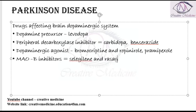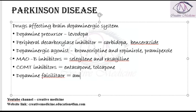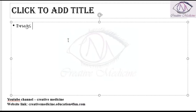The MAO-B inhibitors are selegiline and rasagiline. Then we have catechol-O-methyltransferase inhibitors — these COMT inhibitors are entacapone and tolcapone. Then we have dopamine facilitators; amantadine can also be used in Parkinson's disease. These are the drugs which mainly affect the brain dopaminergic system.